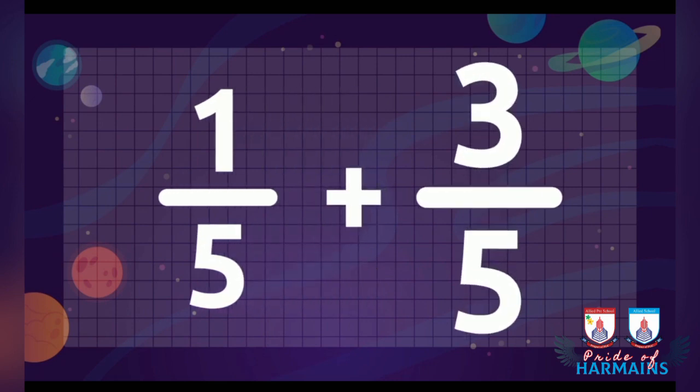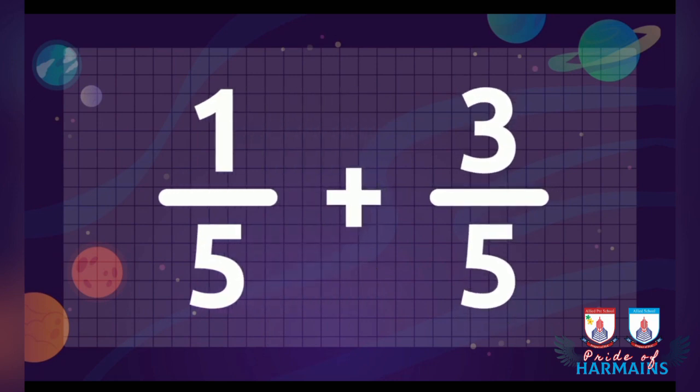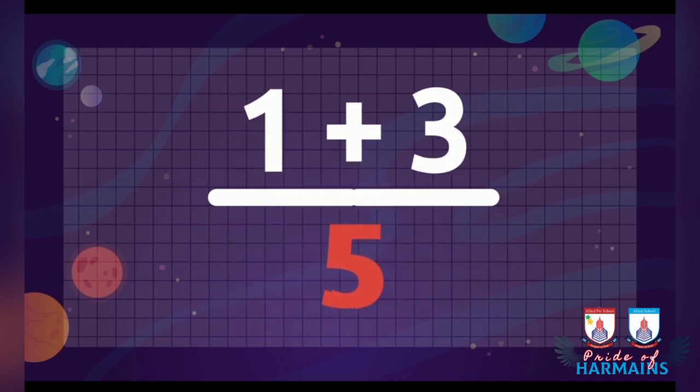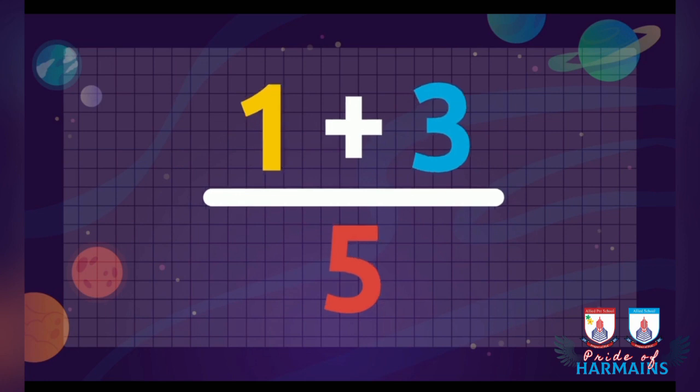Today we are going to do one step further, how to add like fractions. Like fractions jiska denominator common hota hai, same hota hai, hum usko kis tarah add karte hain? Hum uske common denominator ko ek dafa likhte hain, aur uske jo numerators hote hain, jaise 1 and 3, hum usko add karte hain. Chaliye, ab hum ek example solve karte hain.